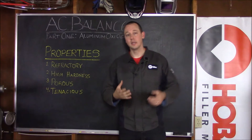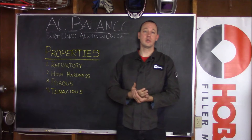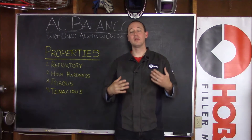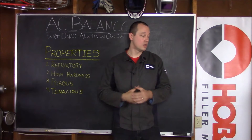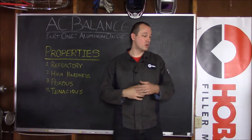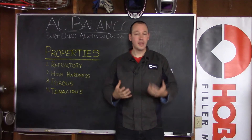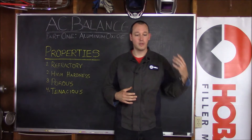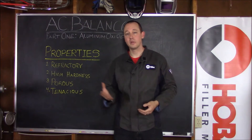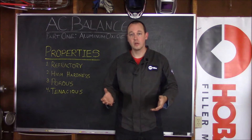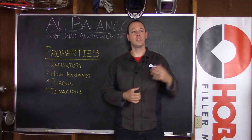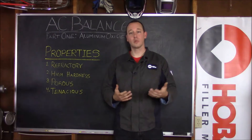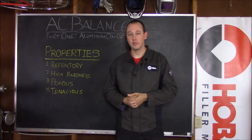Number one, it's refractory — that's really just an excellent Scrabble word that means it has a very high melting temperature. Your base alloy, depending upon which alloy it is, melts somewhere between 1100 and 1250 degrees Fahrenheit roughly, while the oxide actually melts closer to 3800 degrees Fahrenheit.